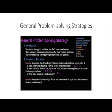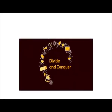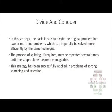Leveraging the general problem-solving strategy: over the years, computer scientists have devised several general and computational strategies that have been successfully used in many problems. One of the most popular and effective strategies is divide and conquer. The basic idea is to divide the original problem into two or more sub-problems, which can hopefully be solved more efficiently by the same technique. The process of splitting may be repeated several times until the sub-problems become manageable. This strategy has been successfully applied in problems of sorting, searching, and selection.